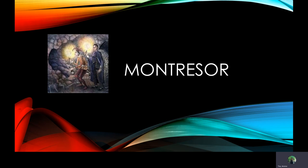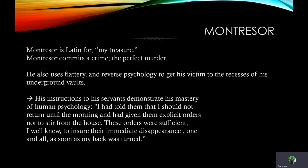One of the characters' names is Montressor. It is Latin for 'my treasure.' He commits a crime — the perfect murder. He also uses flattery and reverse psychology to get his victim to the recesses of his underground vaults. His instructions to his servants demonstrate his mastery of human psychology. He says, 'I had told them that I should not return until the morning and had given them explicit orders not to stir from the house. These orders were sufficient, I well knew, to ensure their immediate disappearance, one and all, as soon as my back was turned.'